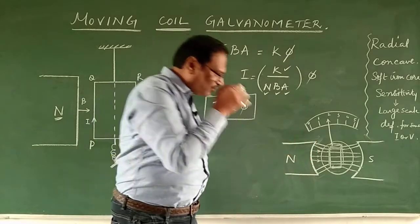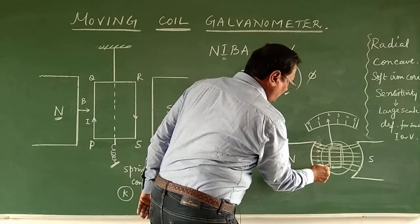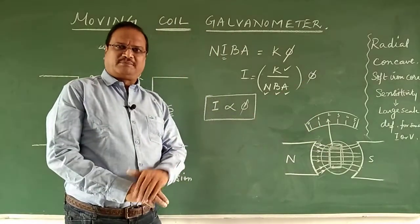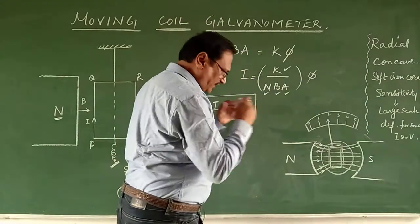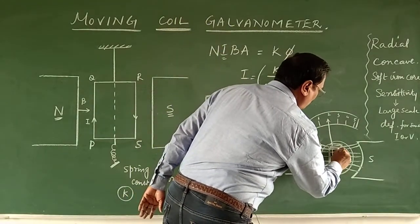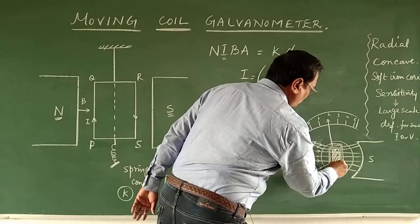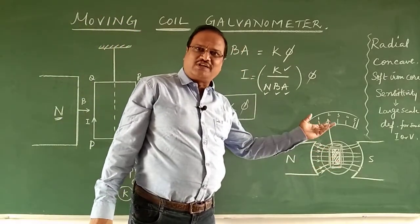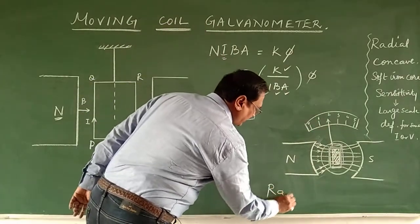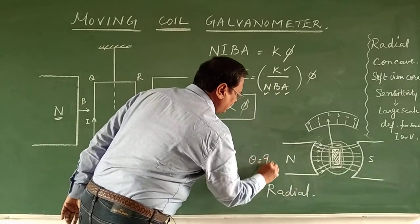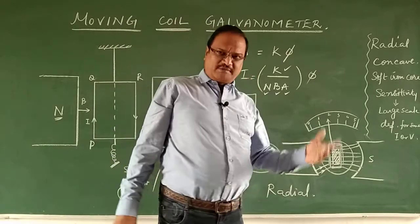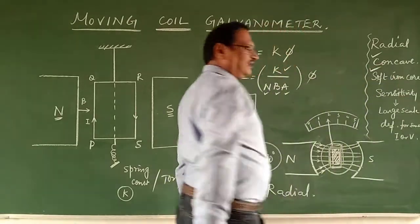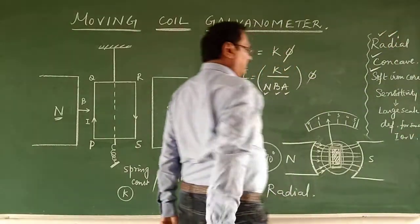The radial magnetic field is focused at the center where the coil is placed, making the turning effect more effective and the magnetic field stronger. Second, inside we also place a soft iron core, which further increases the intensity of the magnetic field. This structure maintains θ = 90° and is achieved using concave-shaped magnets and a soft iron core.